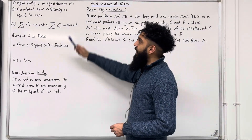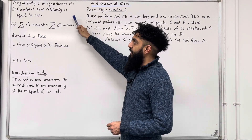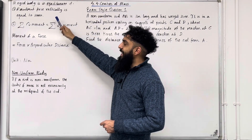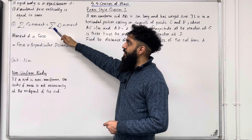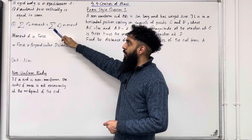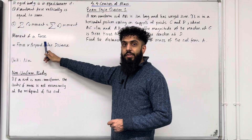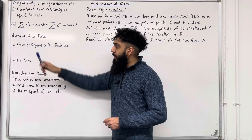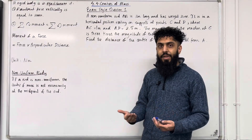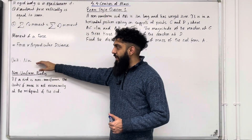Firstly, a rigid body is in equilibrium if two conditions are satisfied. Condition number one: resultant force vertically is equal to zero. Condition number two: sum of clockwise moment is equal to sum of anticlockwise moment. The moment of a force is given by force multiplied by the perpendicular distance. The unit we use for the moment of a force is Newton metres.